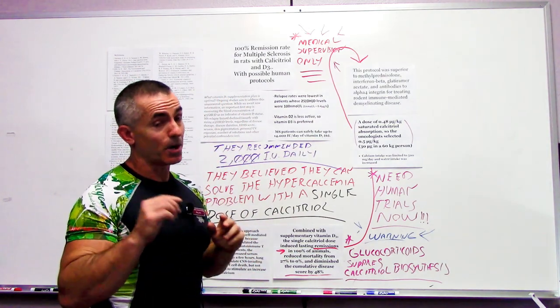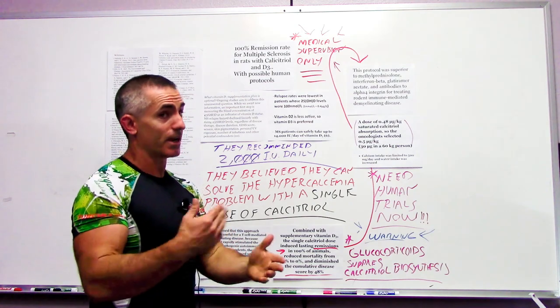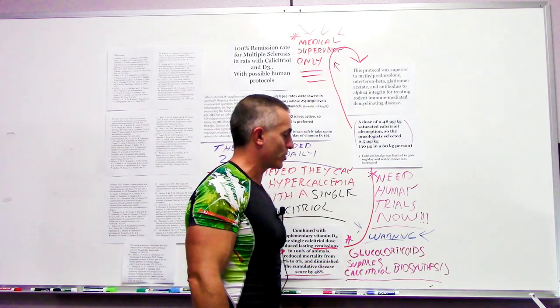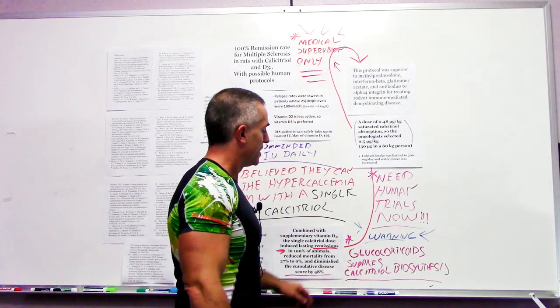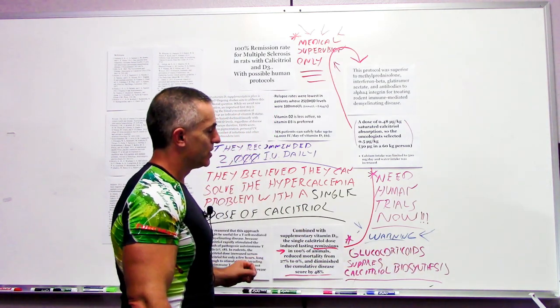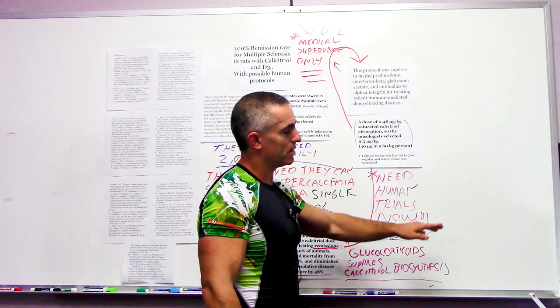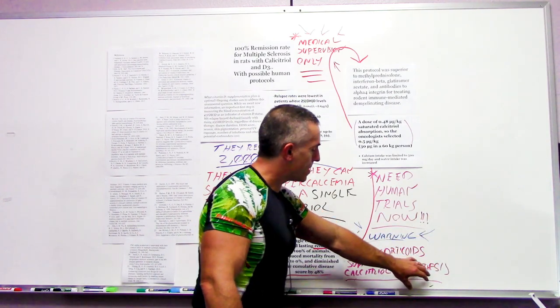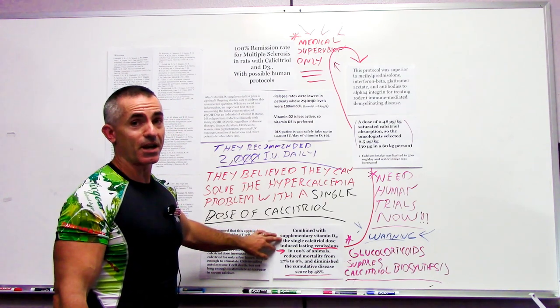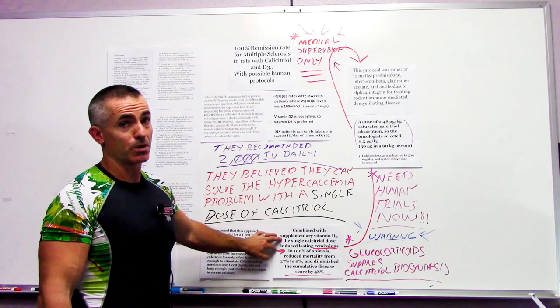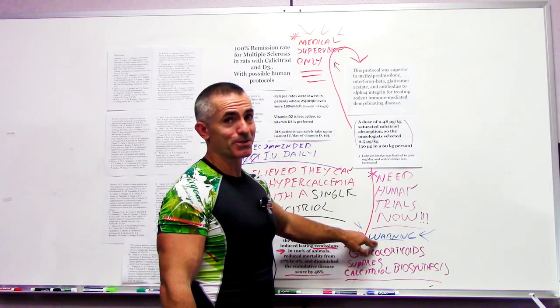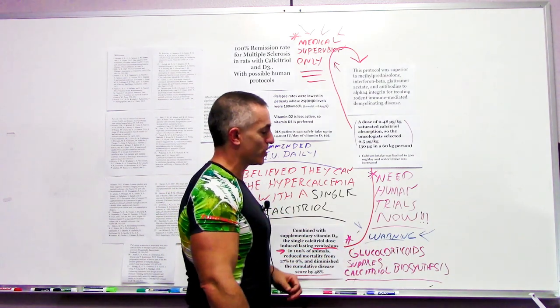This is also one thing I want to jump to just in case I forget later on. The glucocorticoids suppress the calcitriol biosynthesis. So the glucocorticoids ironically suppress the one possible thing that could put multiple sclerosis in remission. And guess what? This is your primary treatment for multiple sclerosis.